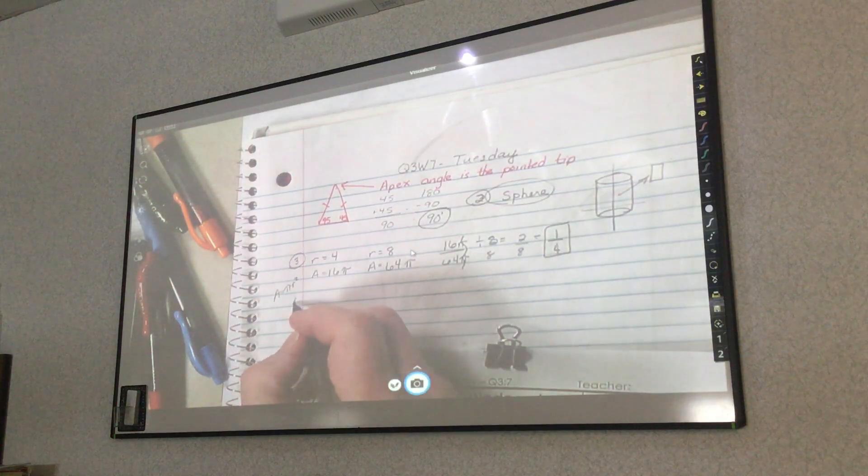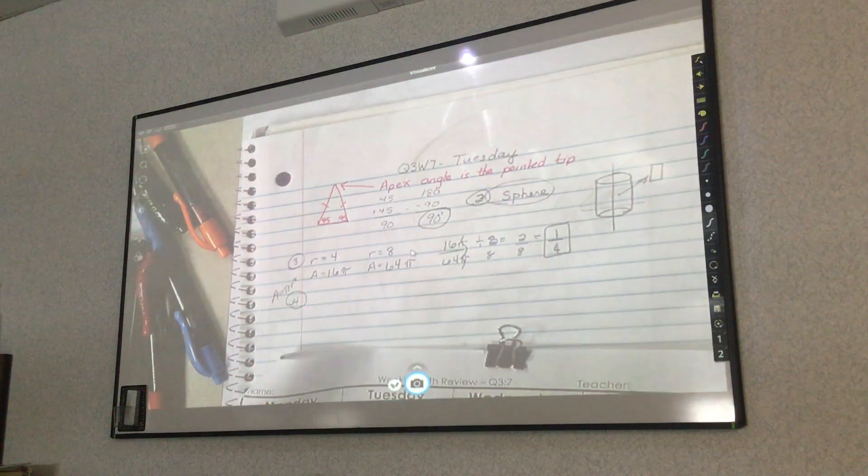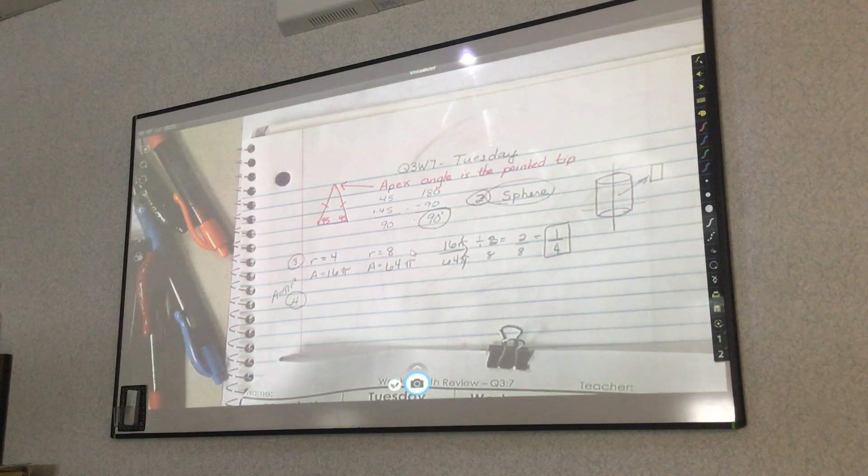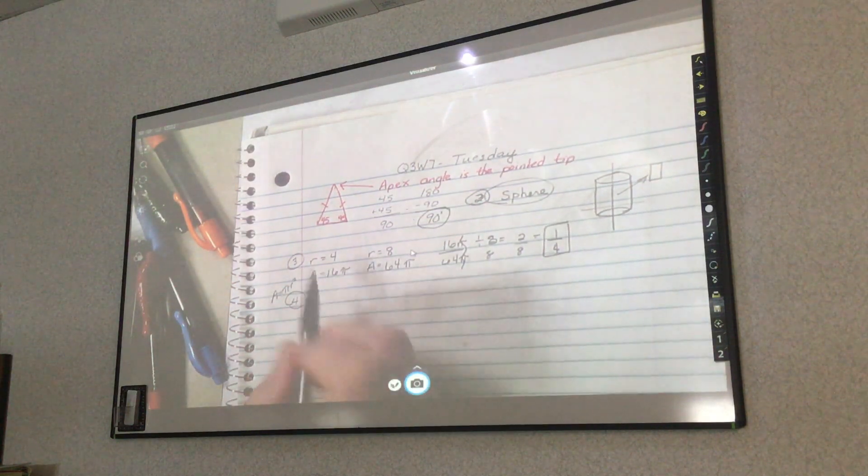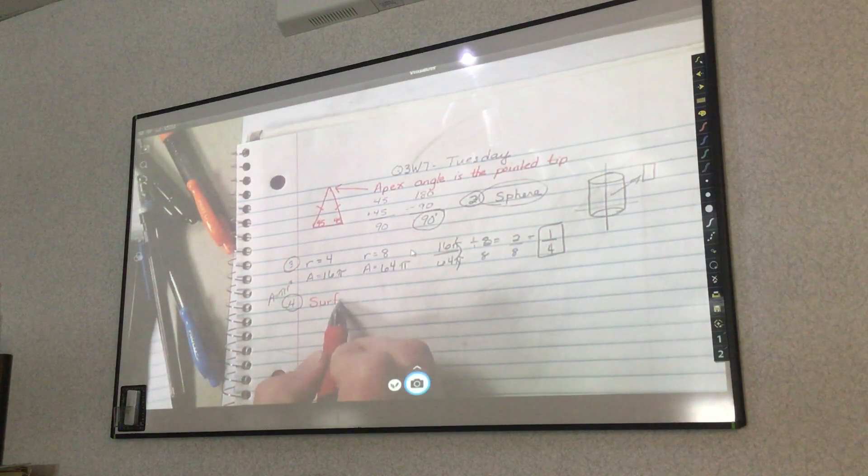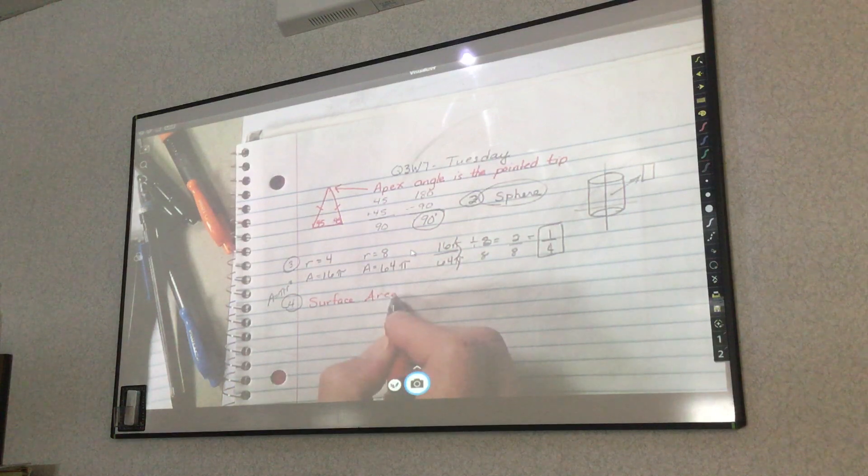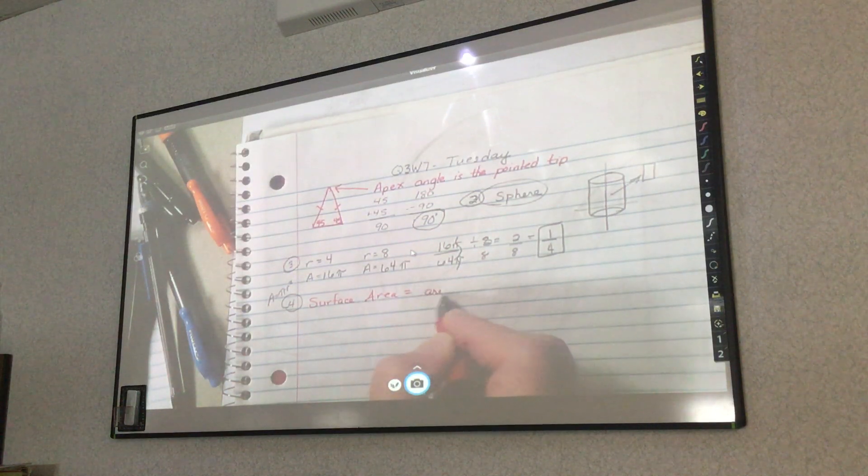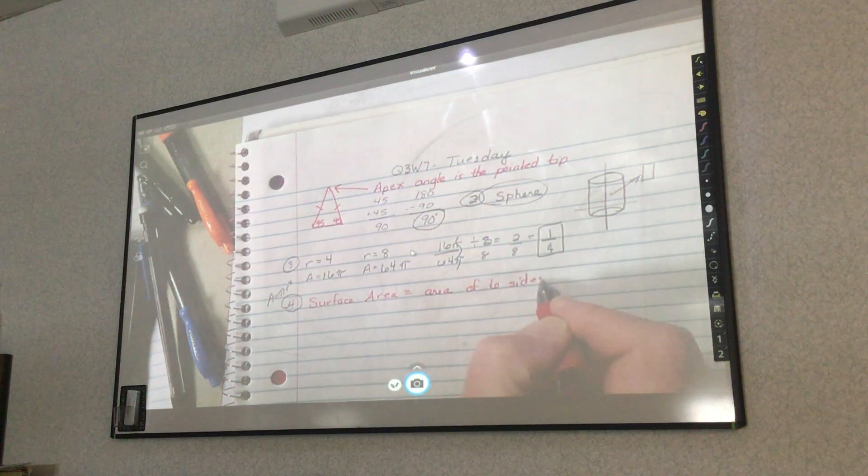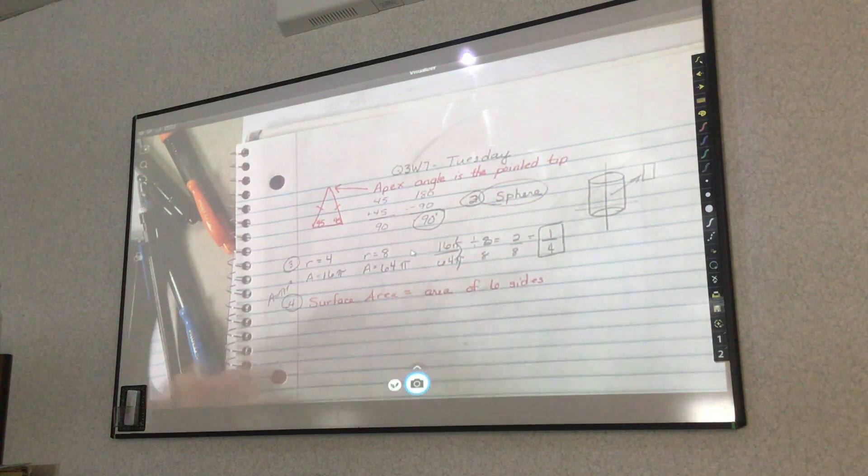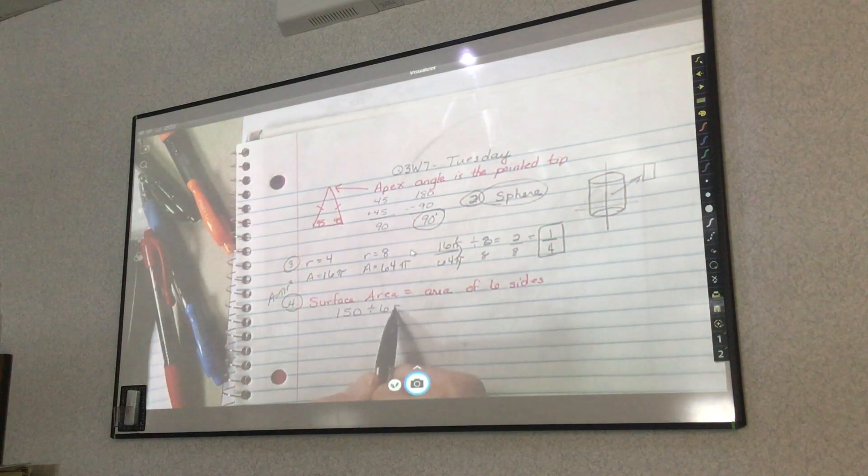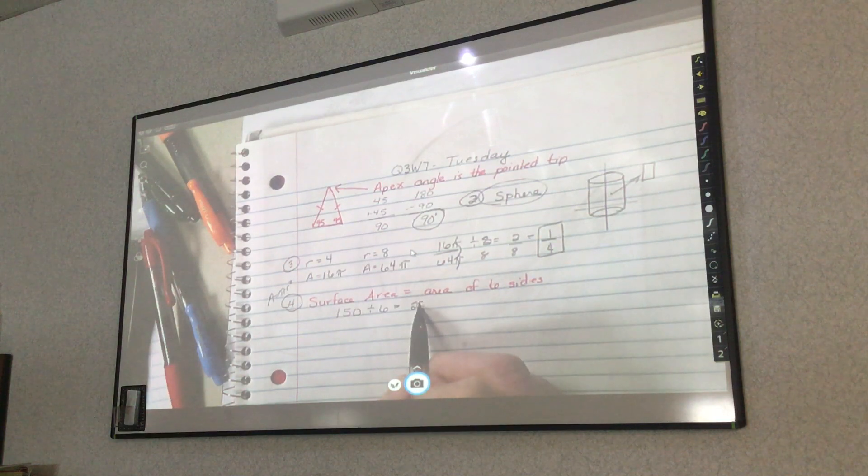Number 4 says, find the volume of a cube whose surface area is 150 degrees. So surface area equals the area of 6 sides. So I need to find my surface area, which is 150. I'm going to divide it by my 6 sides, and I get 25.